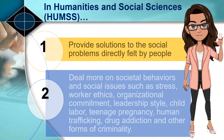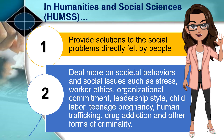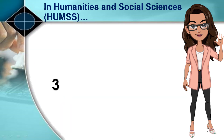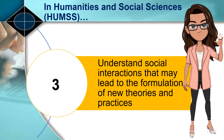In the discipline of humanities and social sciences, research aims to provide solutions to social problems directly felt by people. Researches in this field deal more on societal behaviors and social issues such as stress, worker ethics, organizational commitment, leadership style, child labor, teenage pregnancy, human trafficking, drug addiction, and other forms of criminality. Social science researches lead to the understanding of social interactions that may lead to the formulation of new theories and practices contributing to societal development and welfare.